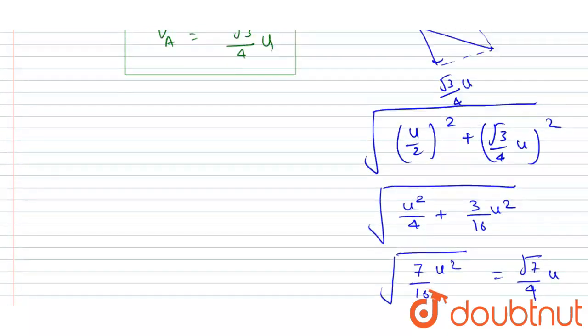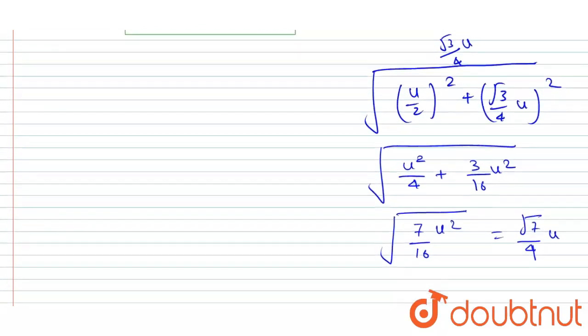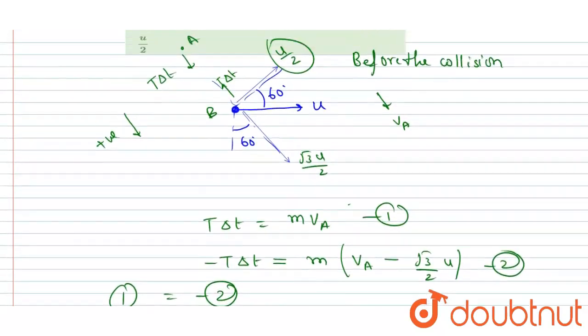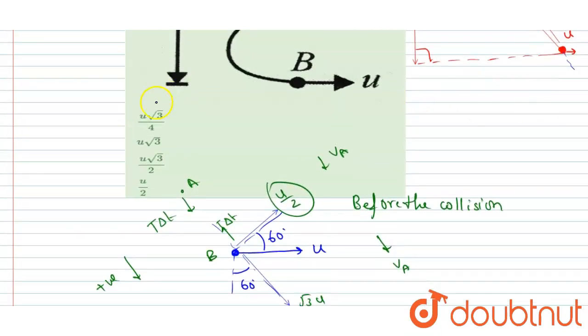That is under root of 7 by 4 u. So if I talk about the velocity of A, it is root 3 by 4 u, and velocity of B is root 7 by 4 u. Now you can check for the option. Root 3 by 4, velocity of A is correct, and here I will write root 7 by 4 u. So this will be the correct option here. Simple, thank you.